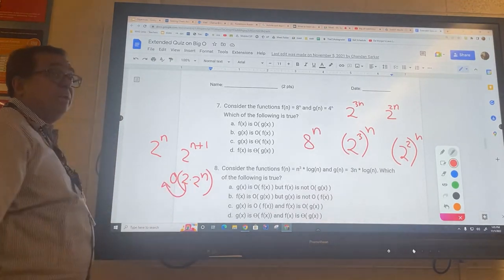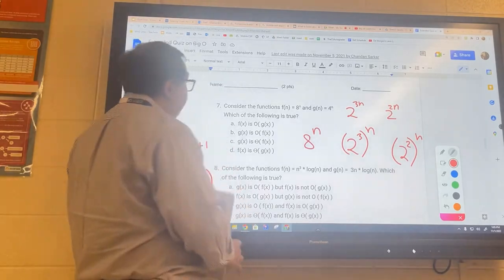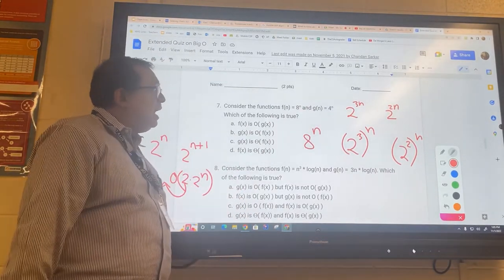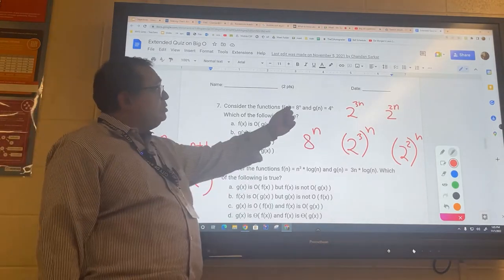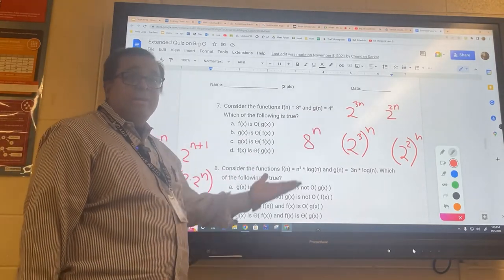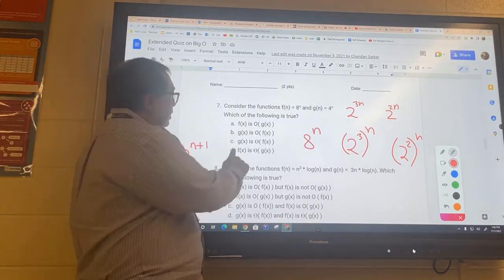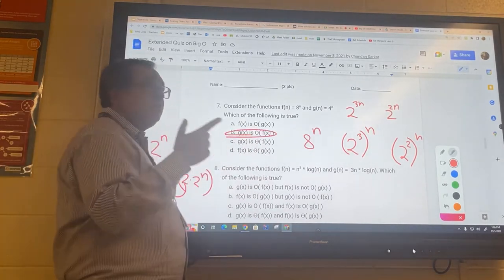So now if that is the case, and these are different, which one grows faster? Eight to the n grows faster than four to the n. That makes sense, right? So which of these statements is true? I think that might be right. I'm going to check that. I'll get back to you to make sure on that.